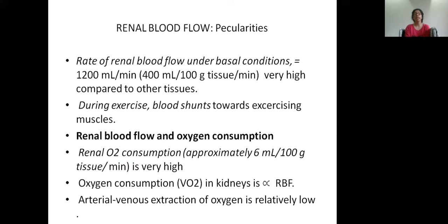Now the peculiarities of renal blood flow. The rate of renal blood flow under basal conditions is very high — 22% of the cardiac output, or 1200 ml per minute. During exercise, excess blood flow is shunted towards the exercising muscles, mainly because of increased sympathetic discharge. The renal oxygen consumption is also very high, approximately 6 ml per 100 g.